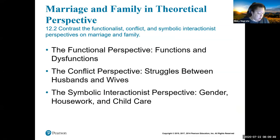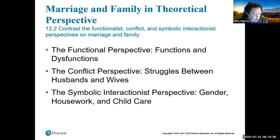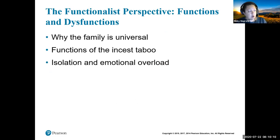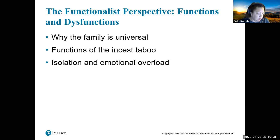Marriage is basically a group's approval and arrangement, usually marked by a ritual or ceremony to show the bond between partners. From a functionalist side, there are six reasons family is universal: economic production, socialization of children, care for the sick and aged, recreation, sexual control, and reproduction. These are the goals of families, whether small or large.